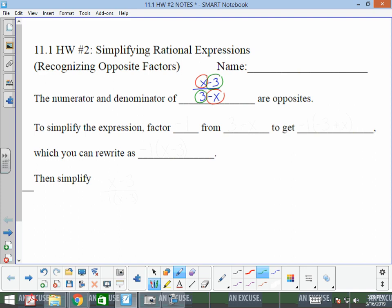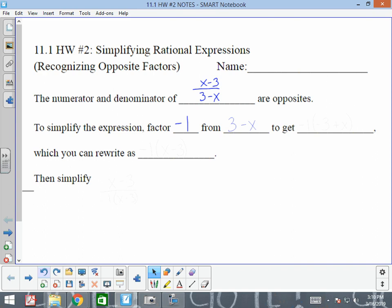To simplify the expression, we're going to factor out negative 1 from the 3 minus x expression. When we do that, we're actually dividing both terms by negative 1.